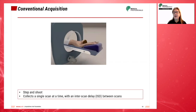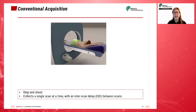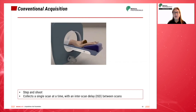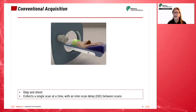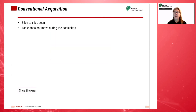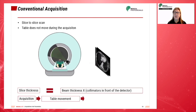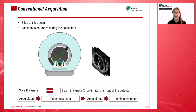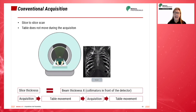Before the introduction of spiral CT, the CT scan consisted of a rotation around a stationary object followed by the translocation of the patient by one slice thickness. This scan mode is called conventional or step-and-shoot CT. With a slice-to-slice scan, the table does not move during the acquisition — you get an acquisition, then table movement, then acquisition, then table movement, until the desired length of anatomy is covered.